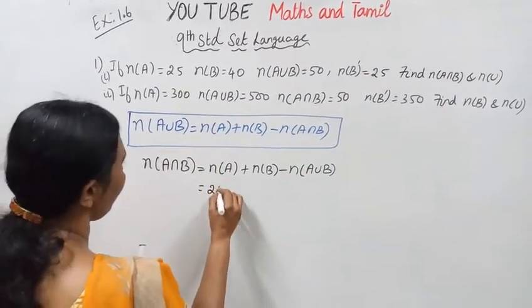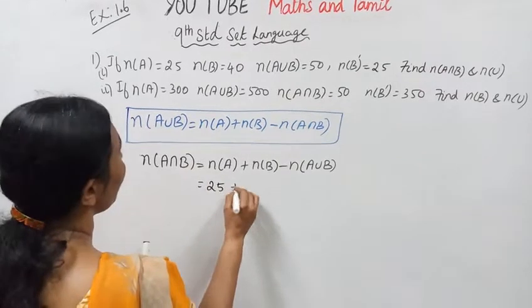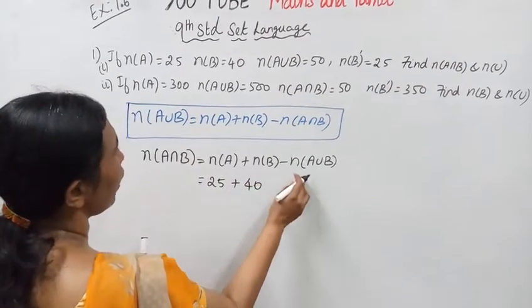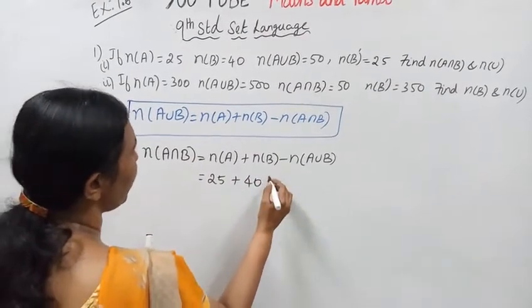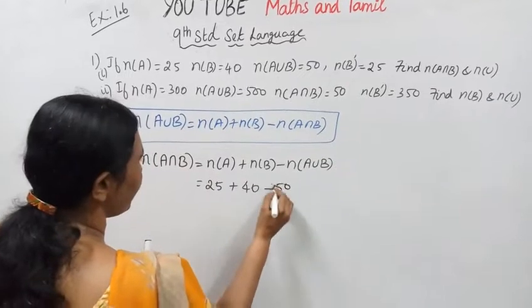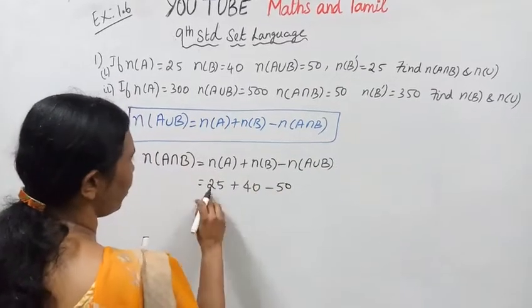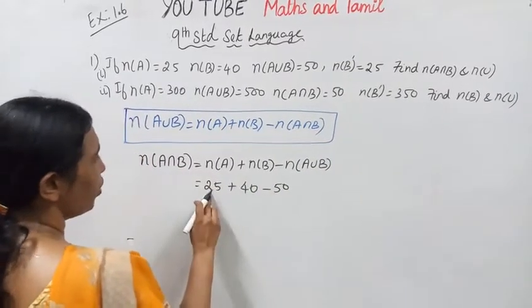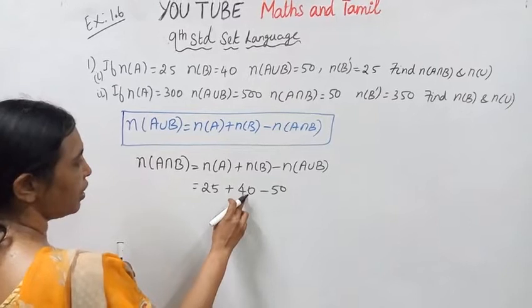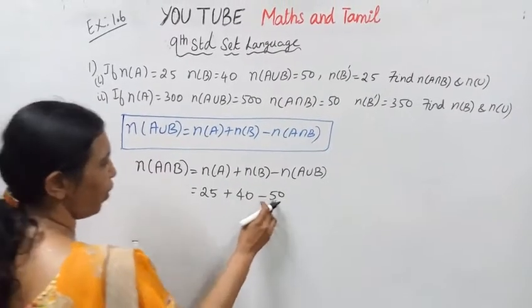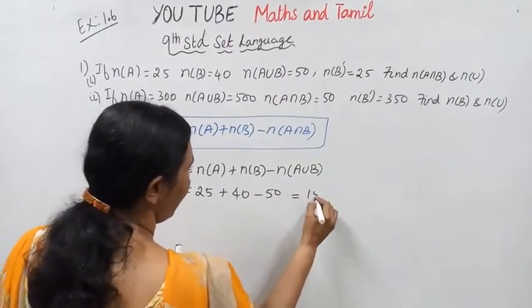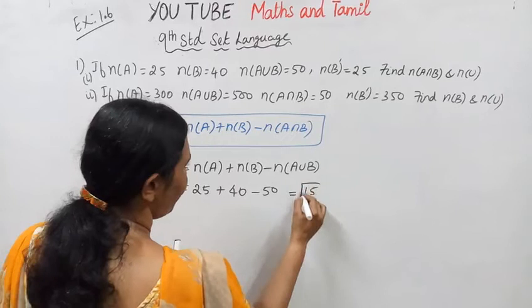N of A is 25, N of B is 40, N of A union B is 50. So N of A intersection B equals 25 plus 40, which is 65, minus 50.